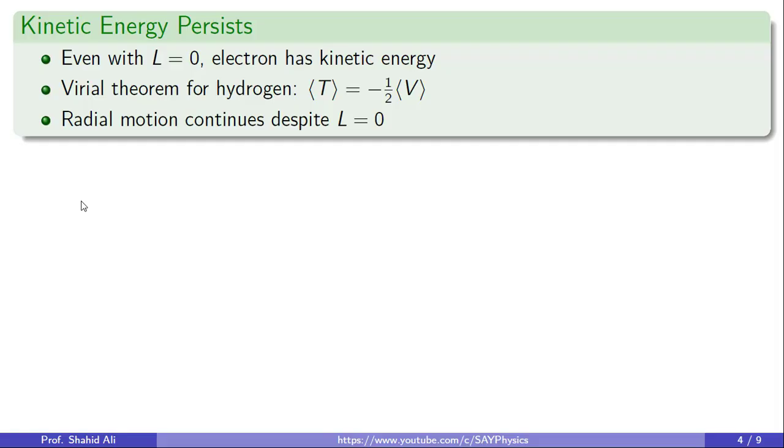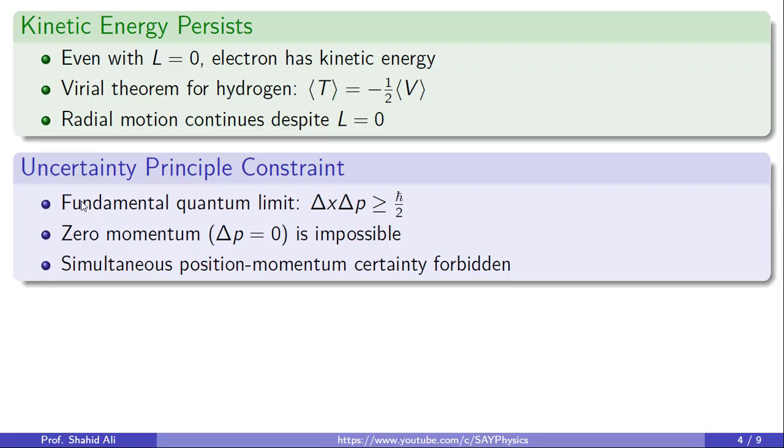In fact, the electron continues to move radially, meaning inward and outward from the nucleus, even if it is not orbiting in a circular or elliptical path. The next block brings in another critical concept, the Heisenberg uncertainty principle. It states that the variation in position and momentum must be greater or equal to h-bar over 2. This states a hard limit in quantum systems. You can't simultaneously know an electron's exact position and momentum. So the idea of the electron having zero momentum, that is being completely stationary, violates this principle. Delta p equal to zero would imply delta x goes to infinity, which is unphysical.